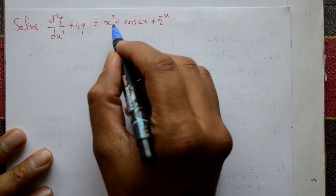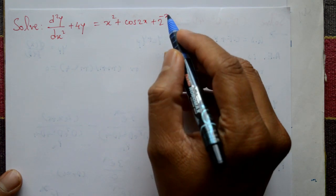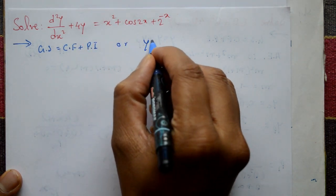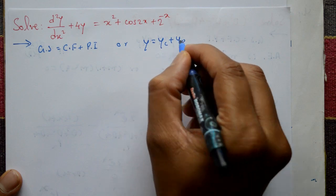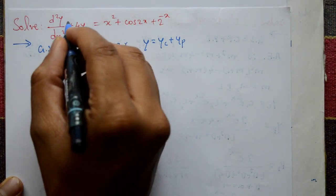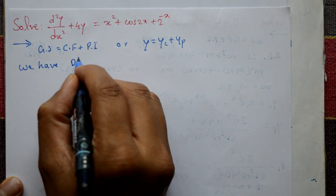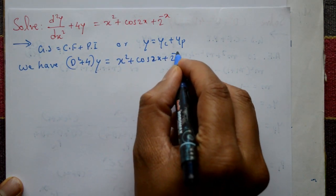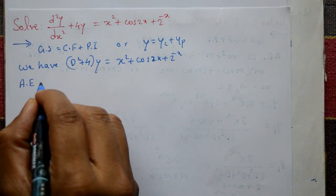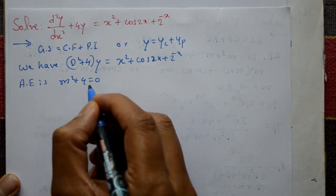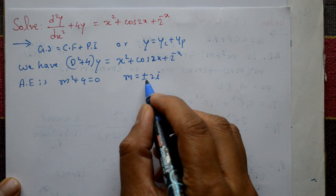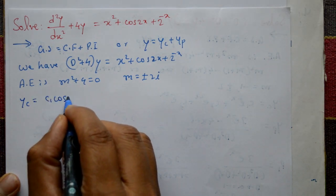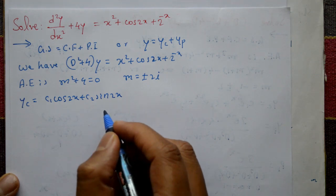Solve d²y/dx² + 4y = x² + cos(2x) + 2^(-x). Find the general solution. General solution equals complementary function plus particular integral. Consider (D² + 4)y = x² + cos(2x) + 2^(-x). The auxiliary equation is m² + 4 = 0, giving roots m = ±2i, complex roots with alpha = 0, beta = 2. So the complementary function is yc = c₁cos(2x) + c₂sin(2x).